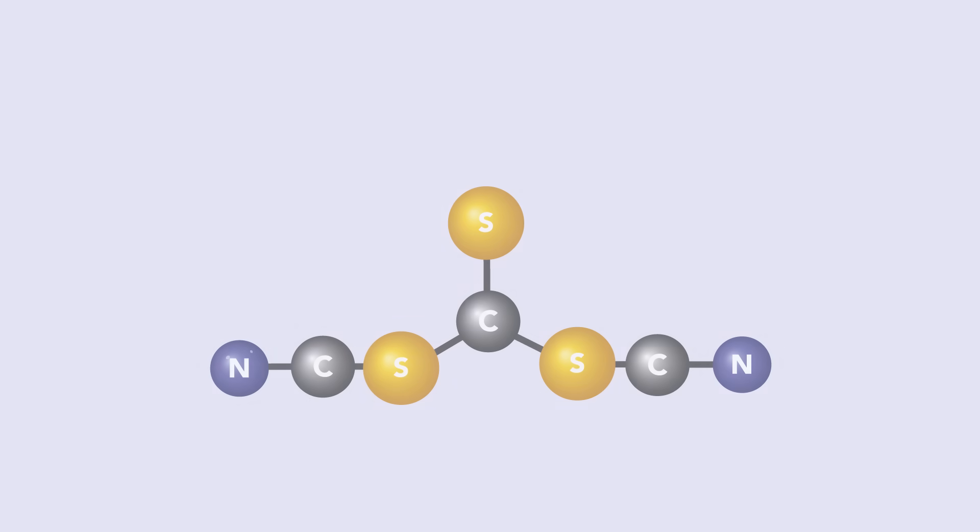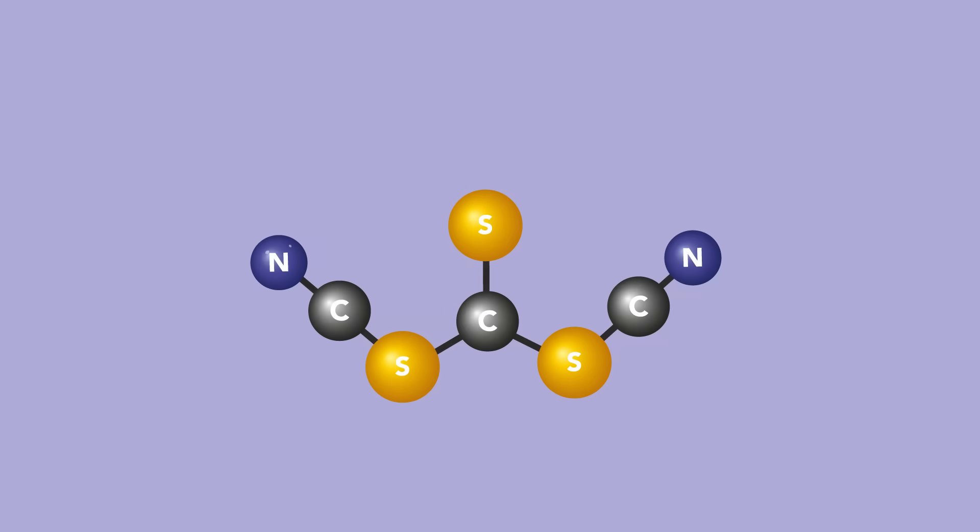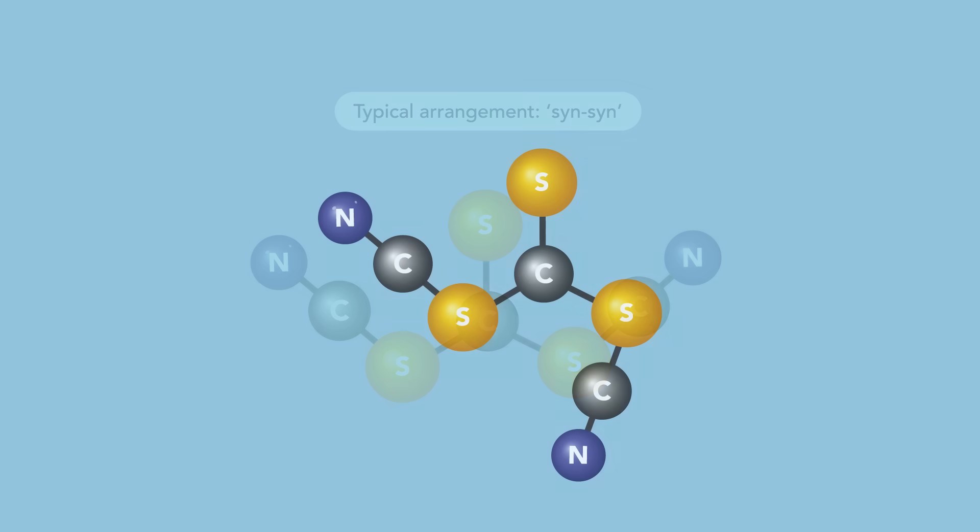Additionally, the team's thiocarbonyl dithiocyanate molecule consistently adopts a highly unusual shape in its solid form. Most molecules of this type settle into a so-called sin-sin arrangement, where both of the molecule's arms point outwards. But this one was an exception, forming a sin-anti shape, with one arm pointed inward and one flipped outward.